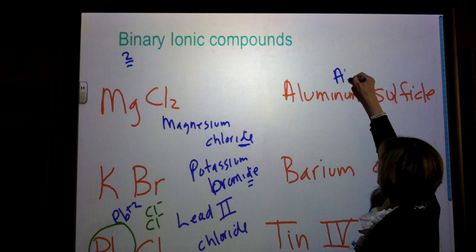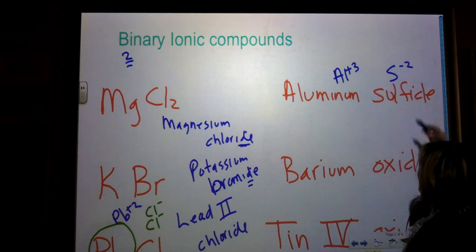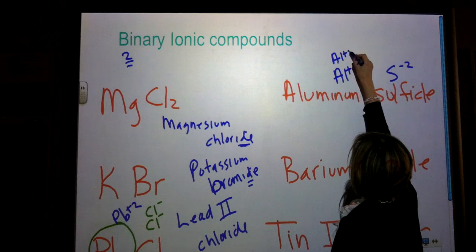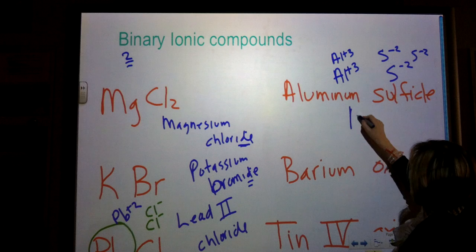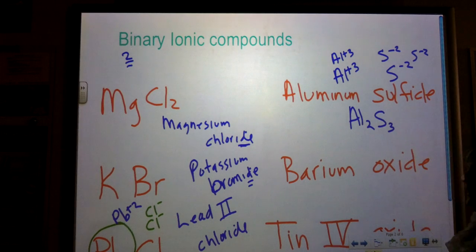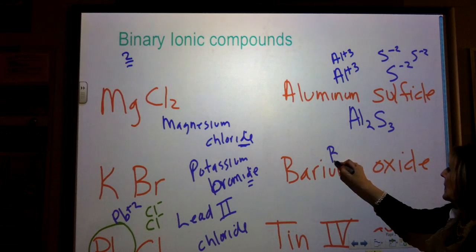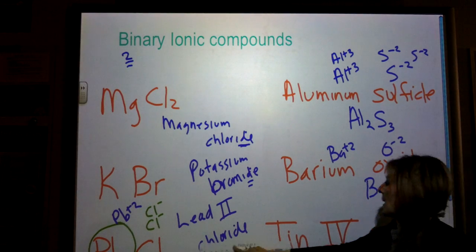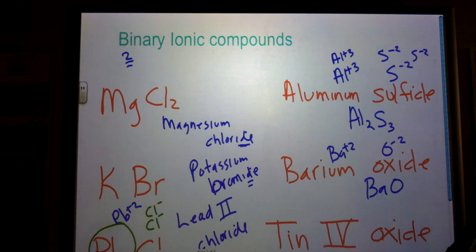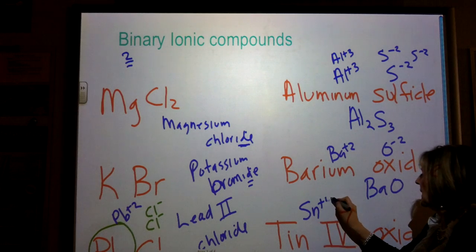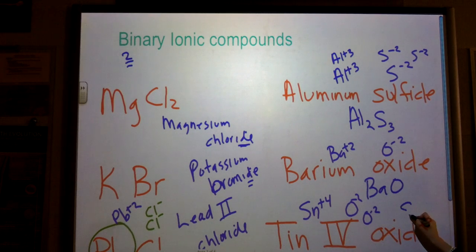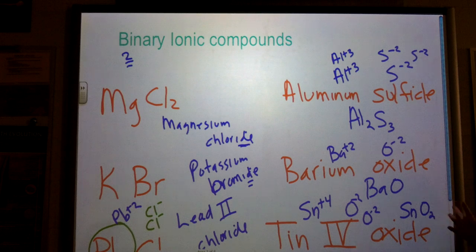Aluminum sulfide — aluminum has a plus three charge when it's an ion. Sulfide has a minus two. So in order to get those to balance out, I'm going to have to have two of those and three of these, so I would write it Al2S3, aluminum sulfide. Barium oxide — barium is a plus two, oxide is a minus two, so this goes together easily. And tin four oxide — remember the Roman numeral tells me the charge, so this is going to be tin four. Oxide, so I obviously need two of these, so it's SnO2.